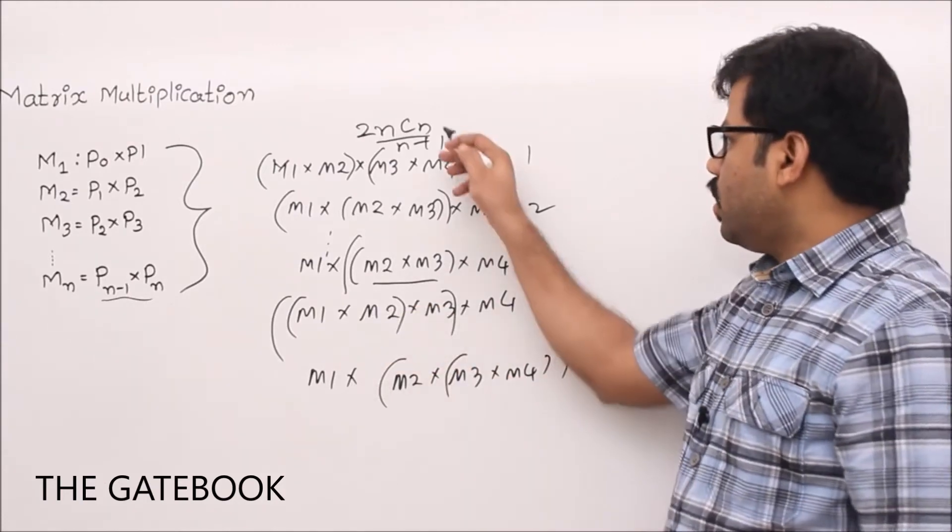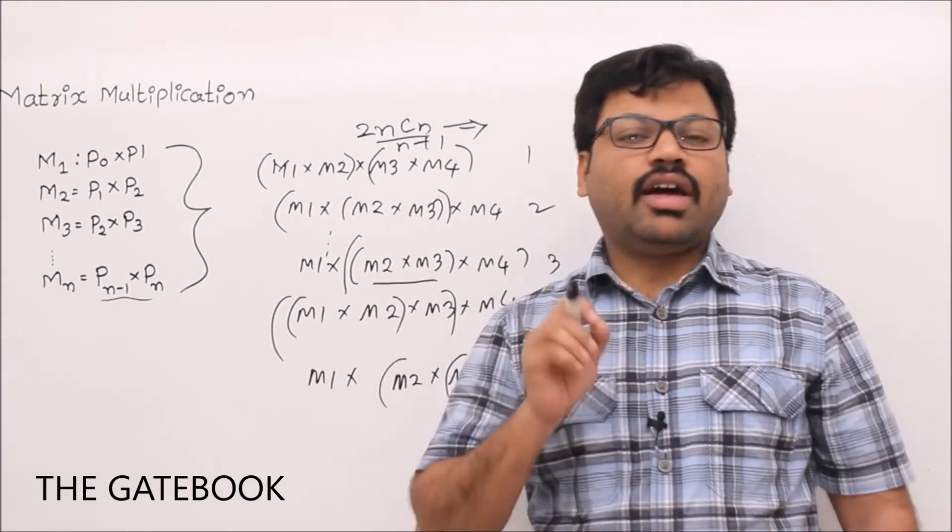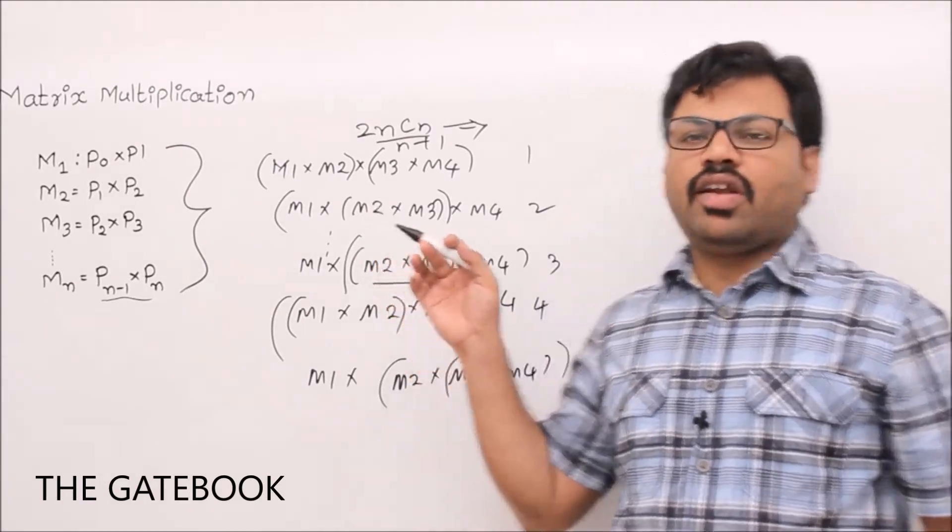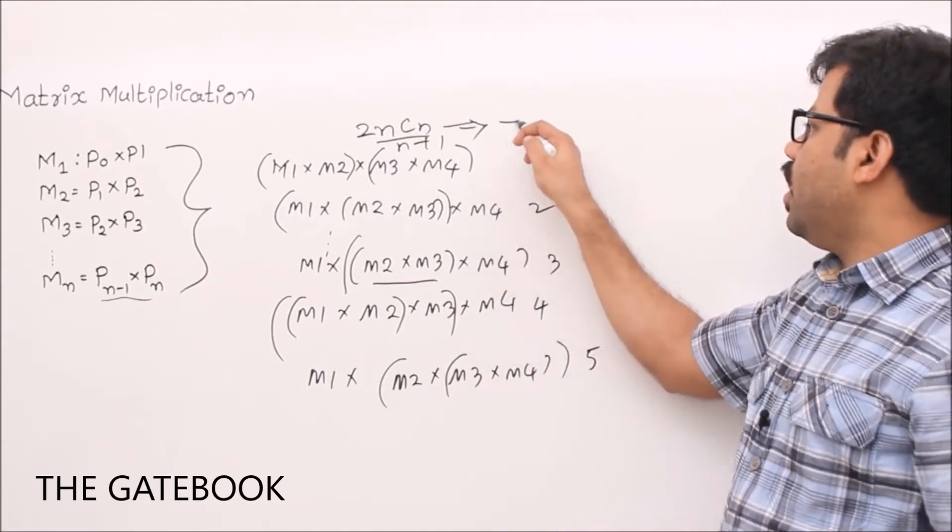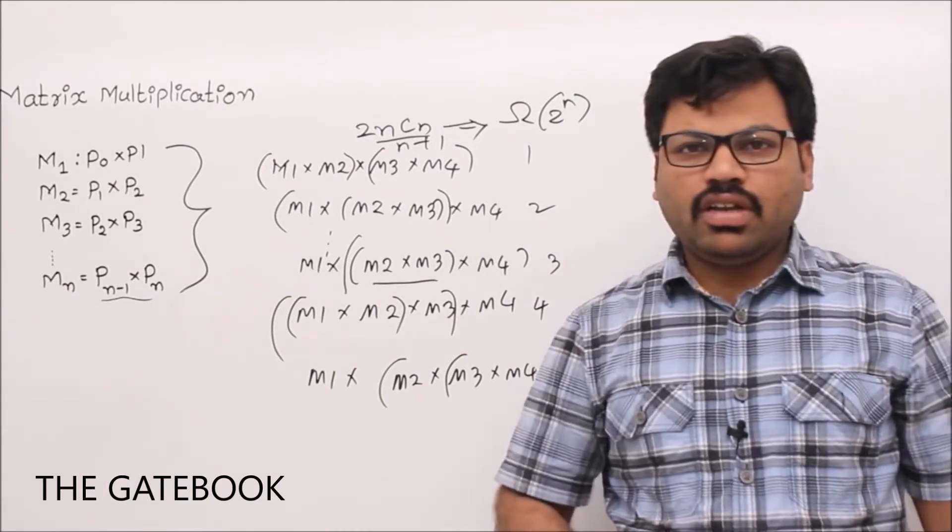Given two sets of parenthesis, how many different ways can you write them? That is the question. So that parenthesization problem is actually Catalan number. The number of different ways you can parenthesize some expression is a Catalan number. That value is 2nCn/(n+1). That is minimum 2^n, it's more than that.